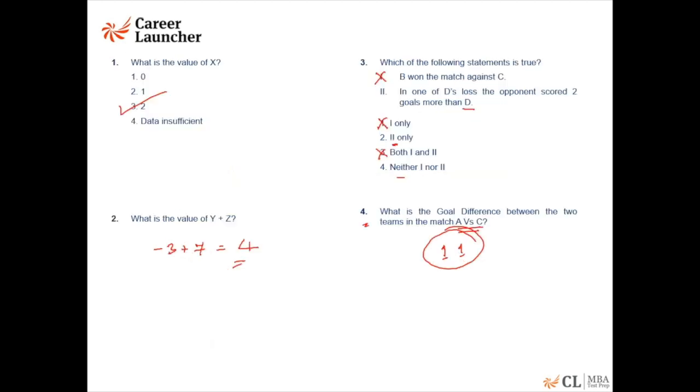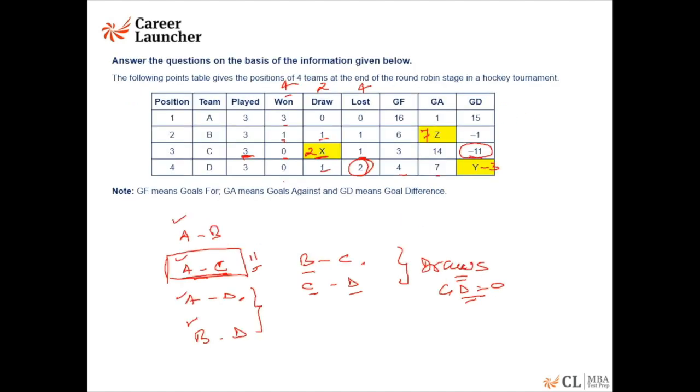Now we need to find what is the goal difference. In one of D's loss, the opponent scored two goals more than D. So what is the total goal difference of team D? Total goal difference is minus 3. But in this particular match, the goal difference will be 0. That means this minus 3 goal difference can happen only by these two matches. Now how will you get a goal difference of minus 3 in two matches in which both D has lost? That means the opponent has scored more goals than D. A has scored more goals than D and B has scored more goals than D.